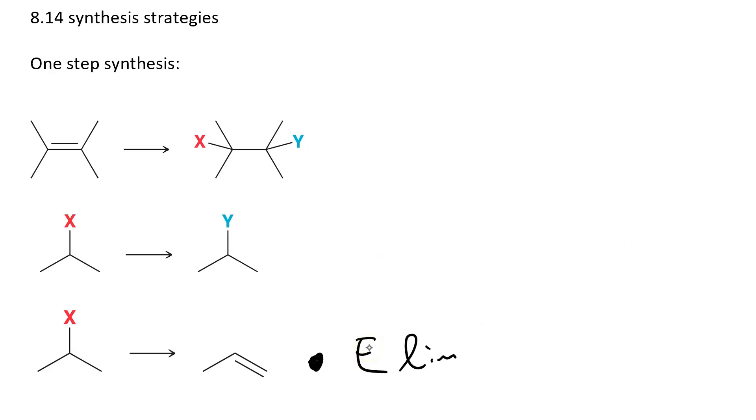We've also done elimination. You treat a substrate like an alkyl halide with a base. If it's a strong base, you get E2. If it's a weak base, you get E1, and you get an alkene.